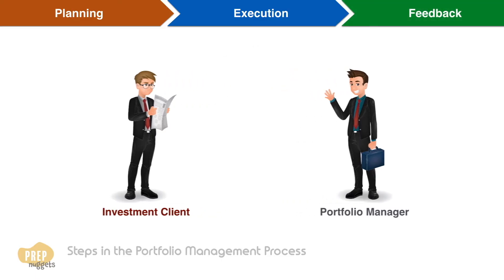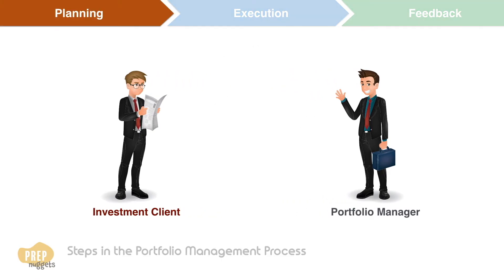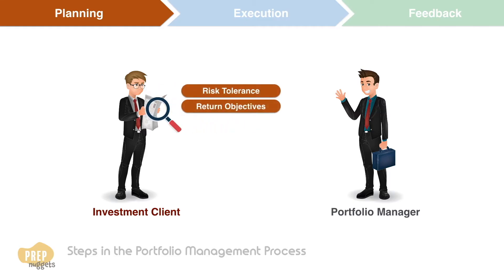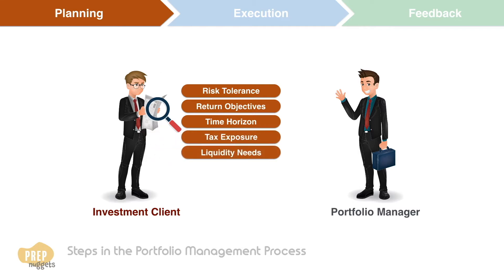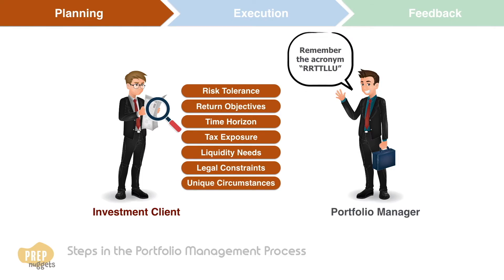The planning stage begins with an analysis of your client's risk tolerance, return objectives, time horizon, tax exposure, liquidity needs, legal and regulatory constraints, and unique circumstances or preferences. Use the acronym RRTTLLU to help you remember these seven key elements of analyzing the client. They will all be detailed in a later lesson.